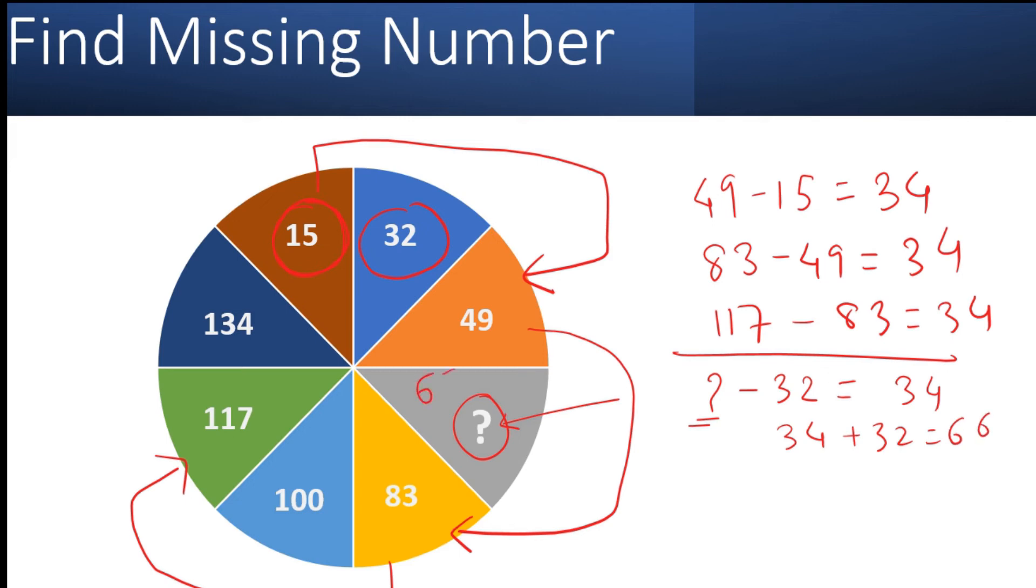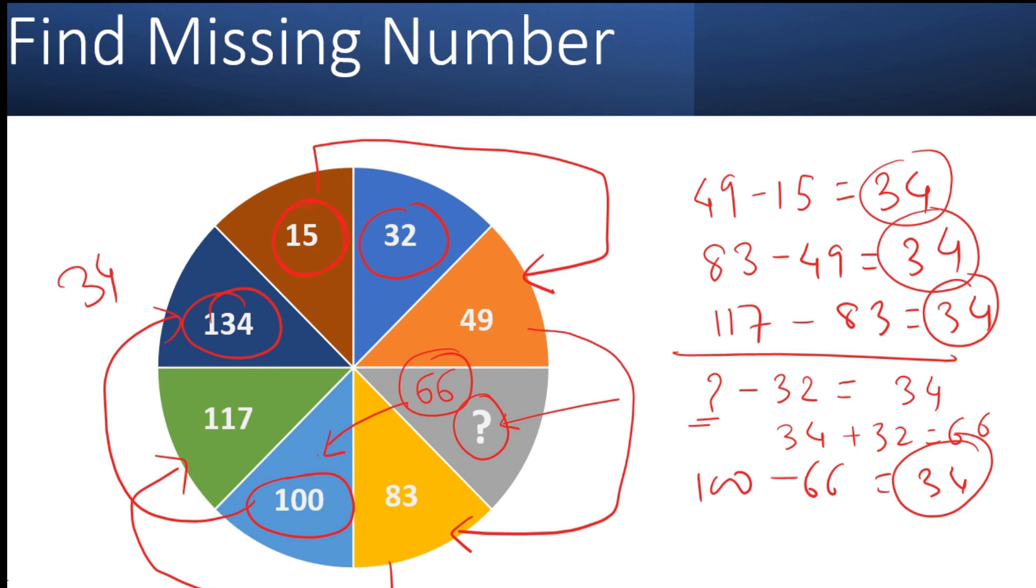Just to confirm, you can check that if you go one step here, 100 minus 66 is again 34, the same difference everywhere. And then 134 minus 100 is again 34.